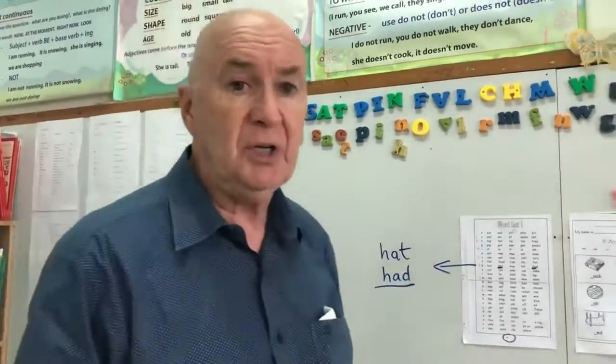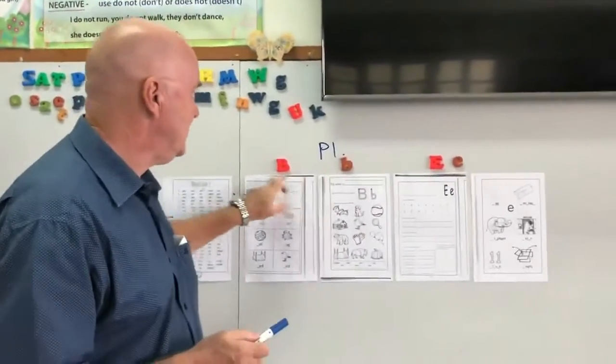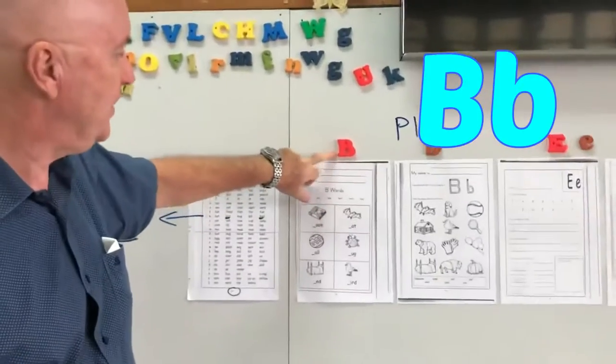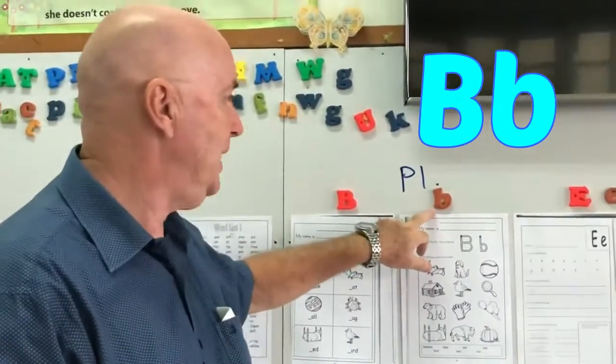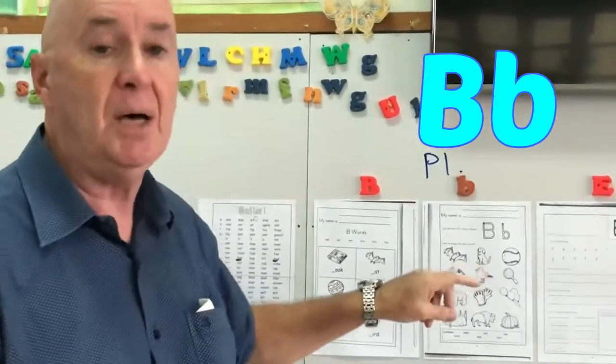Right, today we're going to look at two new letters. Let's look at letter B. There's big B, and small B. B, B, B.